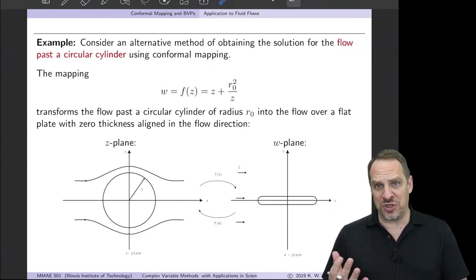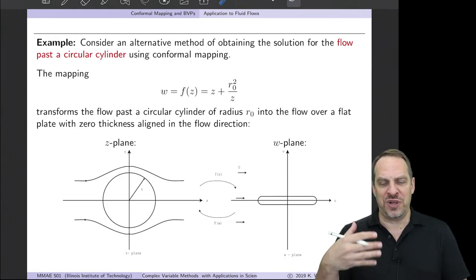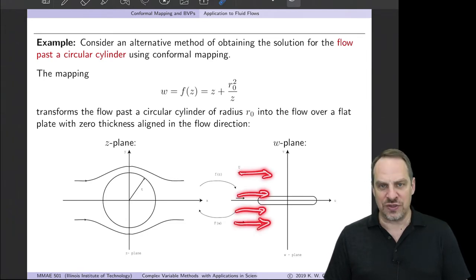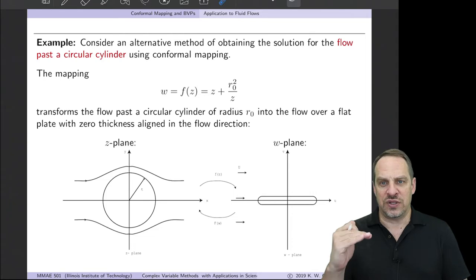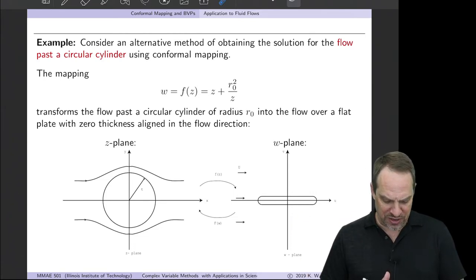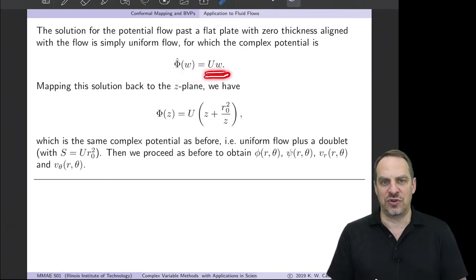And essentially, we've just squashed down our circular shape into a finite flat plate that's aligned with the flow. Well, that couldn't be much easier, right? Because what's the solution of a uniform flow past a flat plate that's aligned with the flow? Well, the flow doesn't even actually see the presence of the flat plate at all, because it's infinitesimally thin. It's aligned with the flow. Flow just slips right over our flat plate. So the solution couldn't be any simpler. And this is now in the w plane. So it's capital Φ hat of w is the uniform flow u times w. So the uniform flow speed u times w.